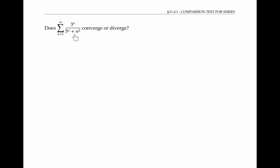Let's use the comparison theorem to determine whether the sum of three to the n over five to the n plus n squared converges or diverges. What matters most is the behavior of the terms when n gets close to infinity — the behavior of the first few terms doesn't matter. Three to the n goes to infinity, five to the n goes to infinity, and n squared also goes to infinity, but five to the n dominates the denominator since it grows much faster.